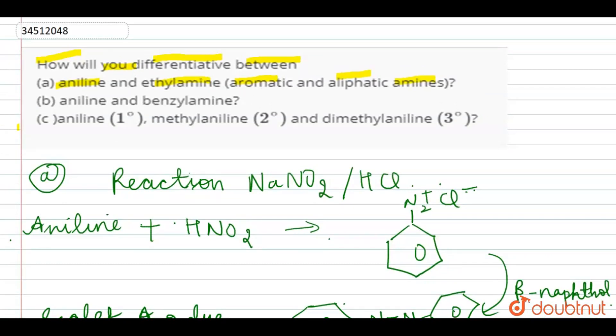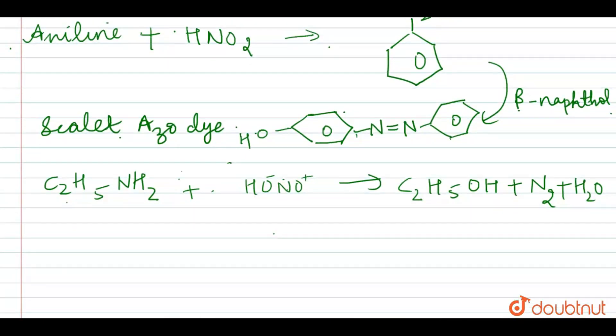Now, if we move to our next part, we have to differentiate between aniline and benzylamine. In aniline and benzylamine, aniline looks like this and benzylamine is CH2NH2. It will give azo dye test.